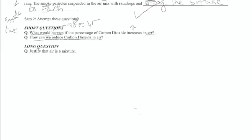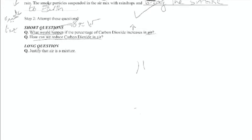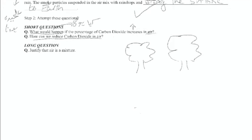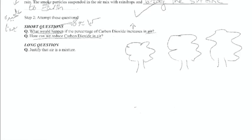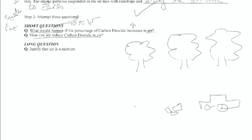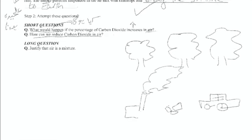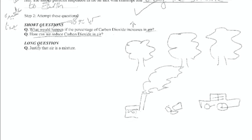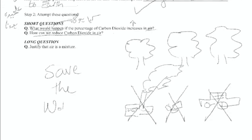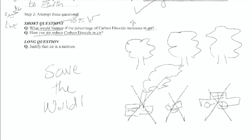How can we reduce carbon dioxide in air? By planting more trees and reducing the burning of fossil fuels like in cars or factories. Factories is spelled F-A-C-T-O-R-I-E-S. This way we can save the world by reducing carbon dioxide in air.